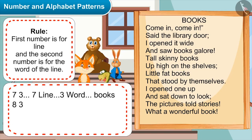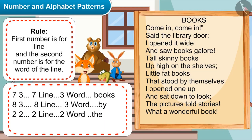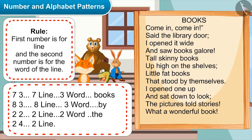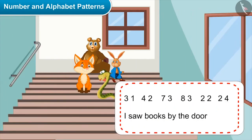Next, 8,3 means eighth line, third word. Then 2,2 means second line, second word. And 2,4 means second line, fourth word. So Chatura, you want to say: I saw books by the door.